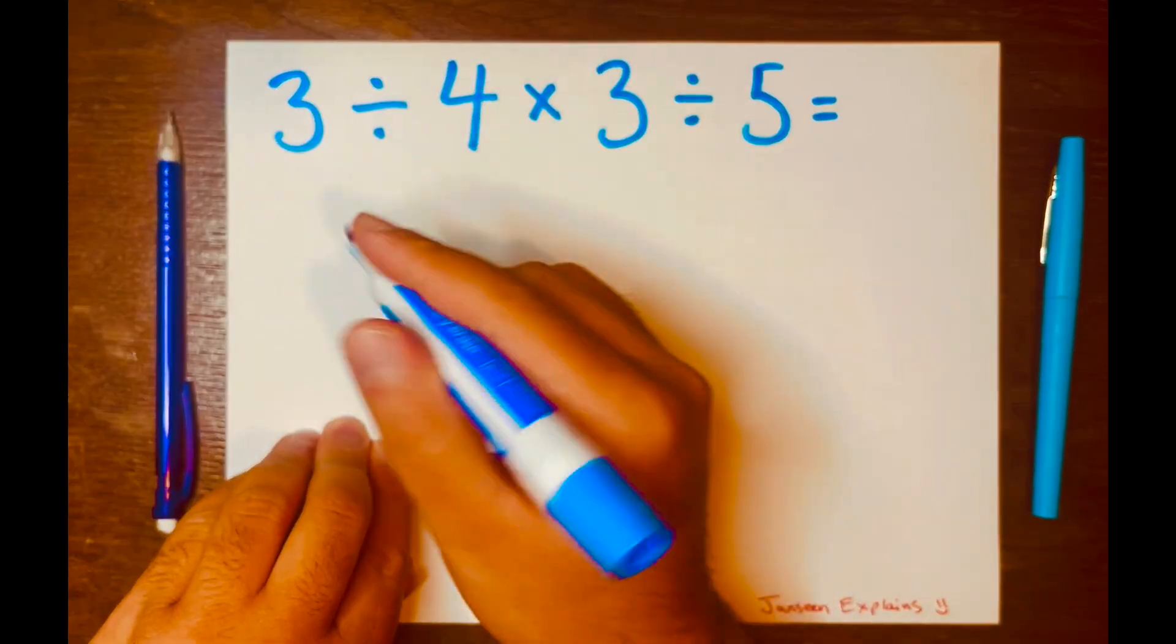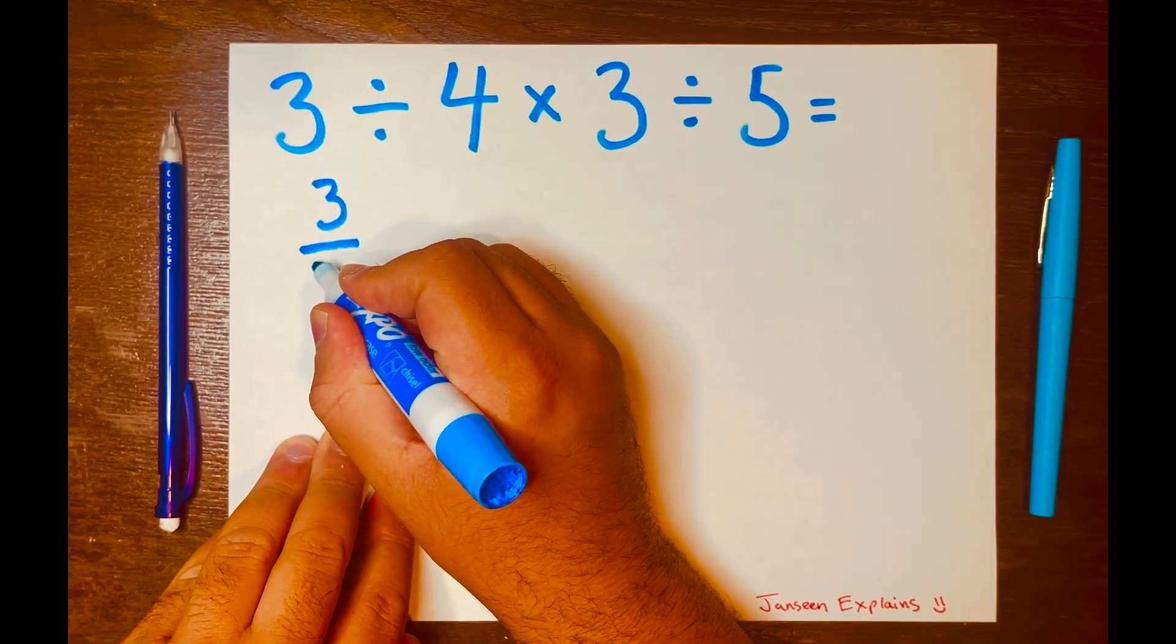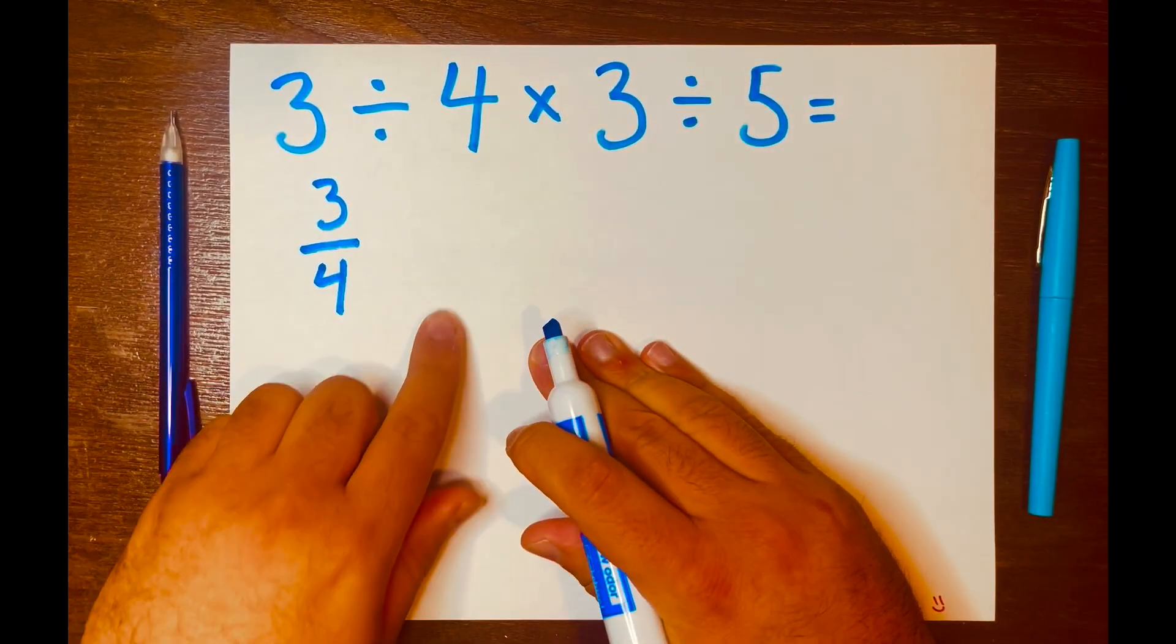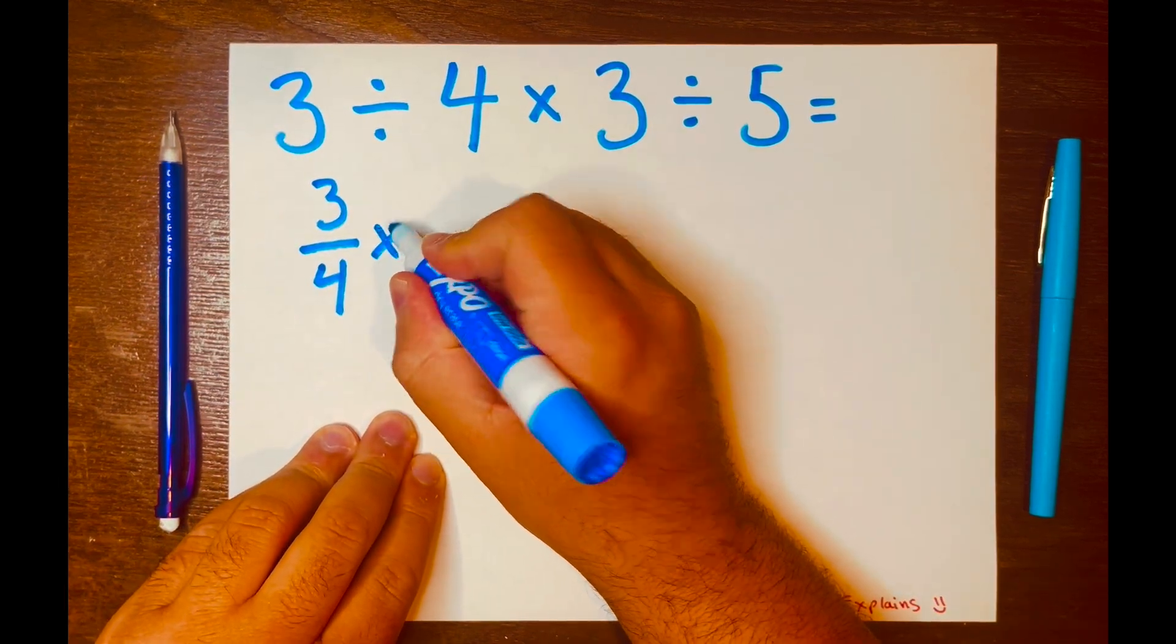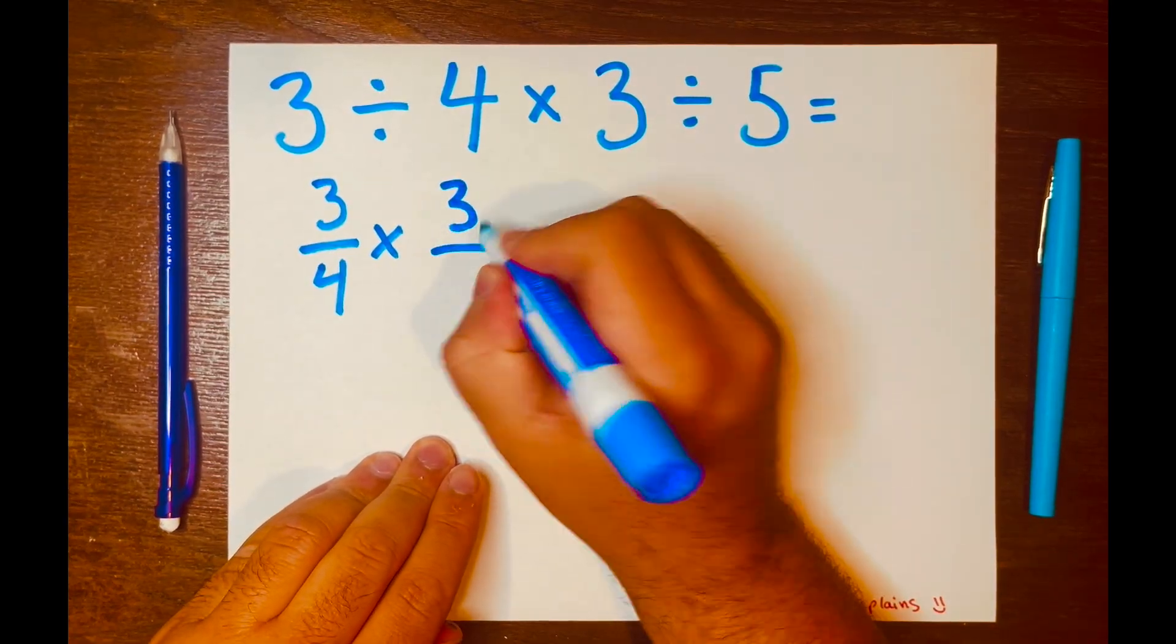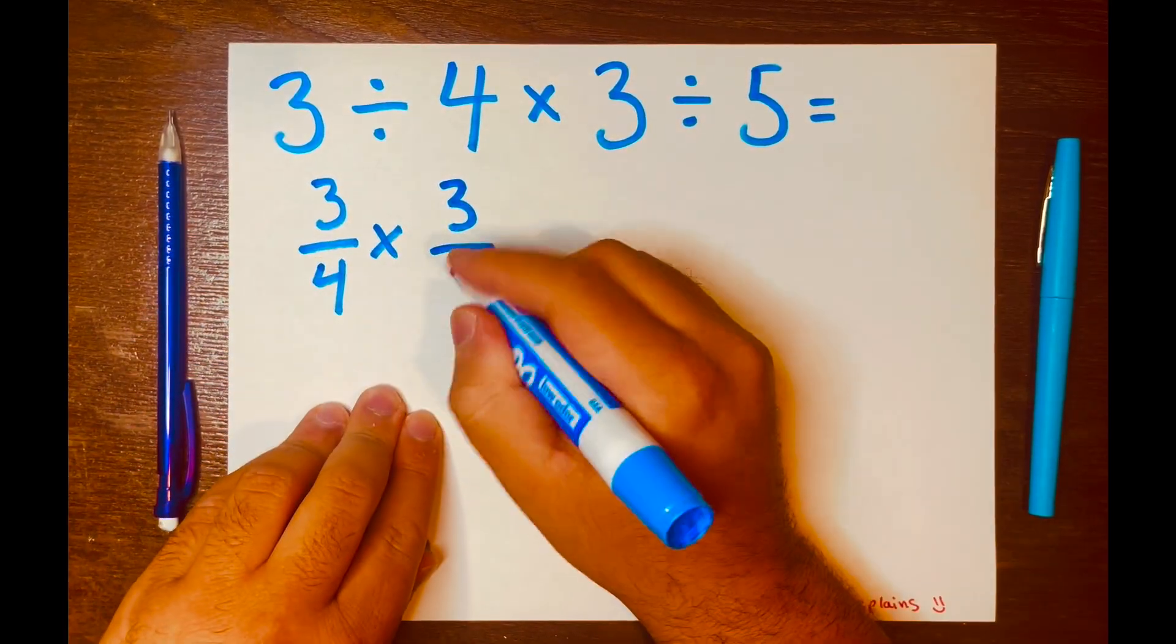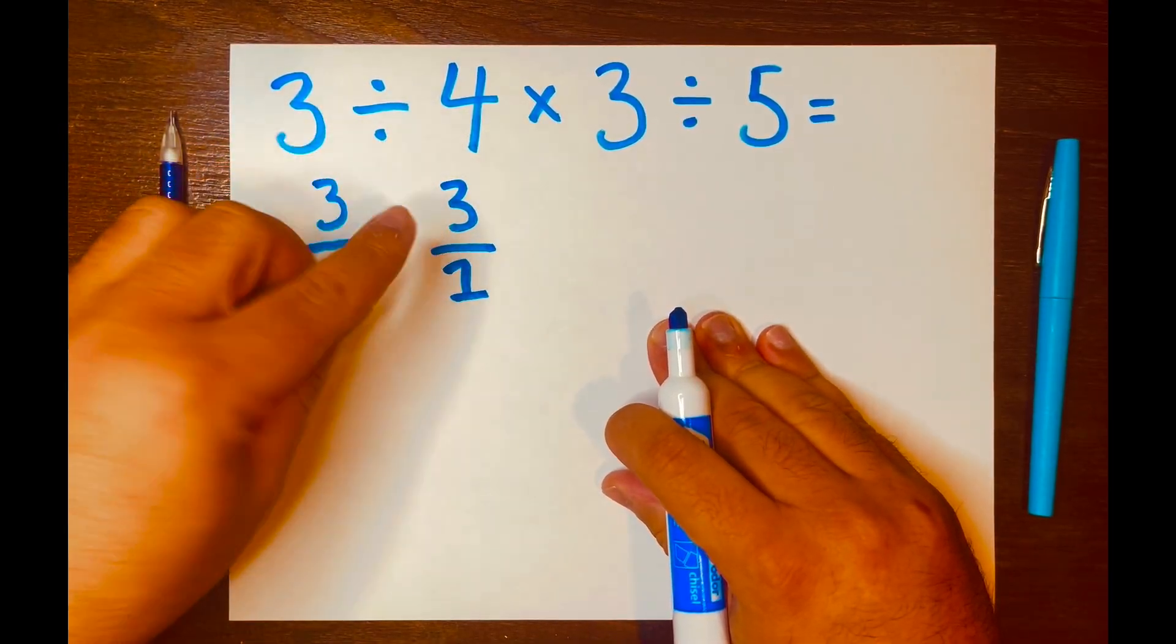So three divided by four, I'm going to turn this into a fraction, so three over four. And then I'm going to bring the multiplication symbol and bring down that three. I want to turn this three into a fraction because we know three divided by one equals three, does not change the three.